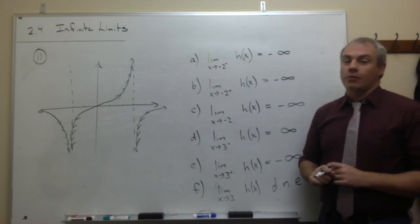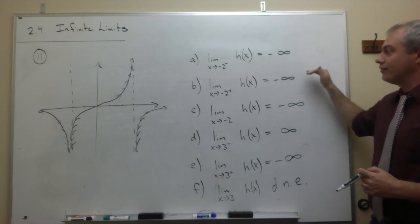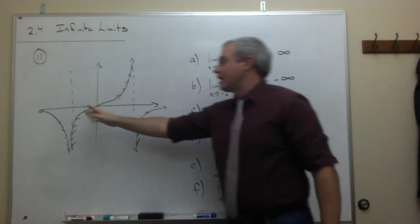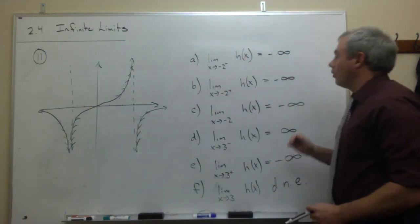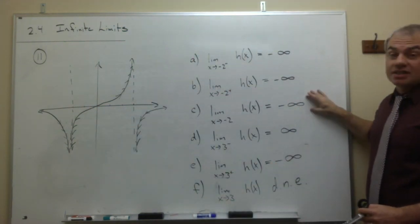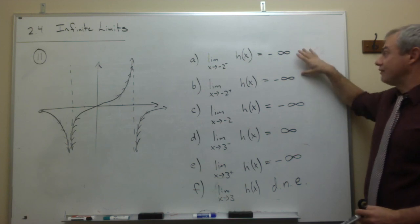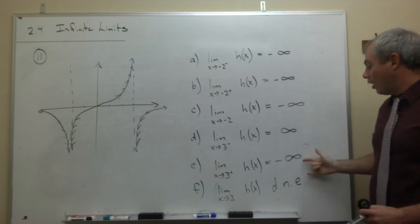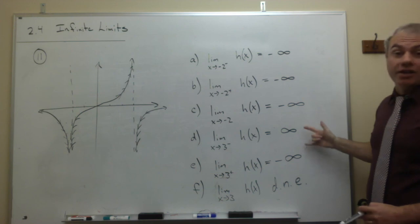So we were able to figure out left-hand limits and right-hand limits for both of these vertical asymptotes at negative 2 and 3. For one of them, the limit does exist because the left-hand limit and right-hand limit agree. For the other, it does not because they don't agree.